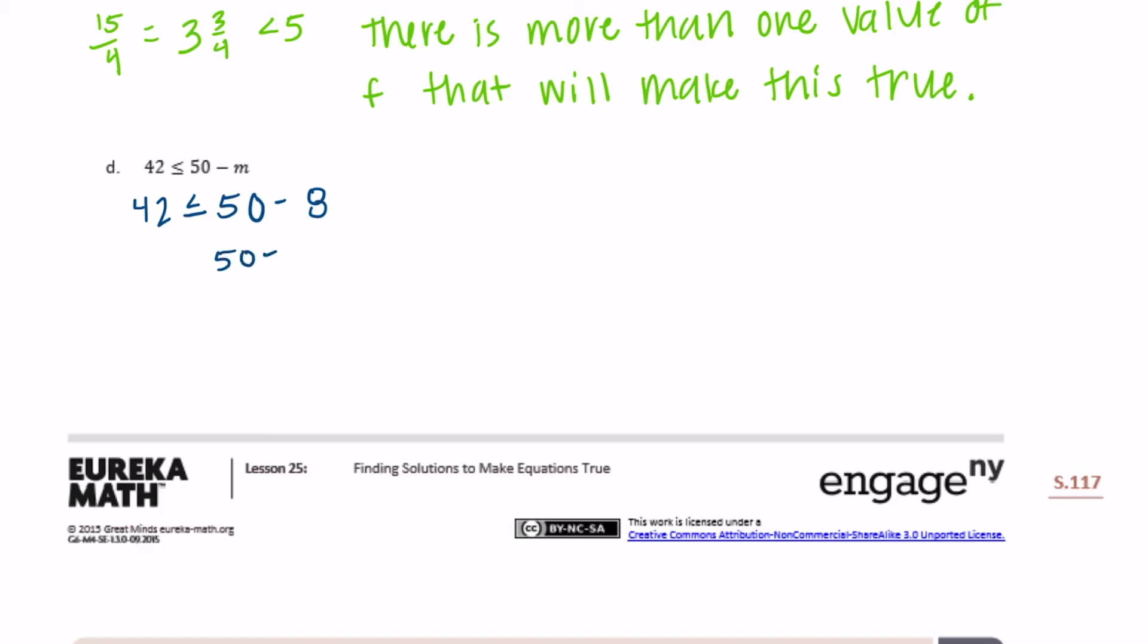So it's going to have something to do with 8. Let's try if I did 50 minus 9. Let's see if that's true. So 42 is less than or equal to if I did 41. Is 42 less than or equal to 41? No, that's not true.